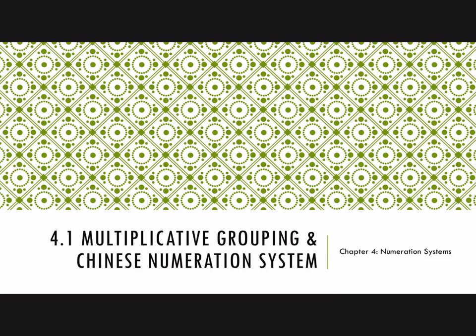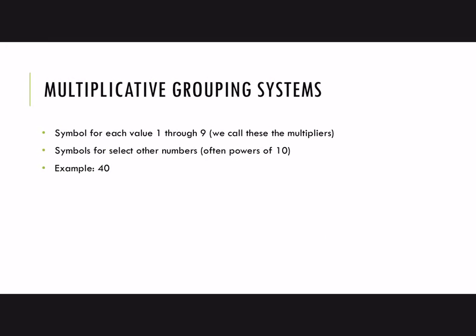In this video, we'll look at a multiplicative grouping system and then a historical example, the Chinese numeration system. This is a slight improvement on the simple grouping system because we no longer need to write out all of the different symbols that were needed, for example, in the Egyptian system.